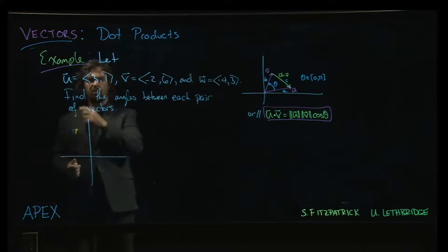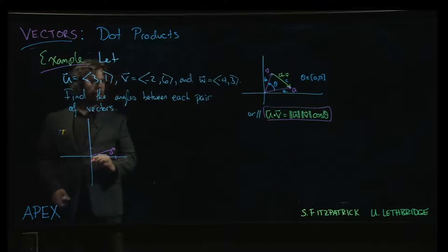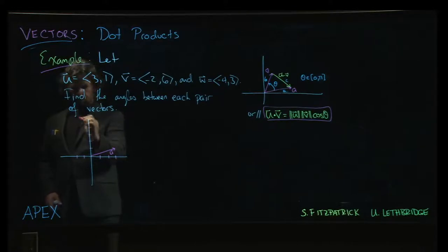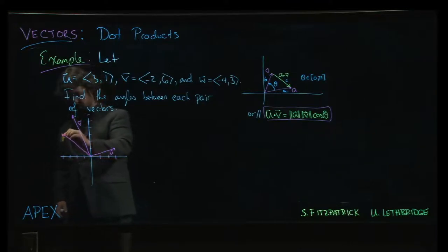So let me just get ourselves started. We can plot the vectors 1, 3, and 1 for the first one. Okay, so there is the vector u. For v, we go 2 to the left and up 3, 4, 5, 6, somewhere there. And finally, we have w, which is 4 to the left, 3 up, so about there.